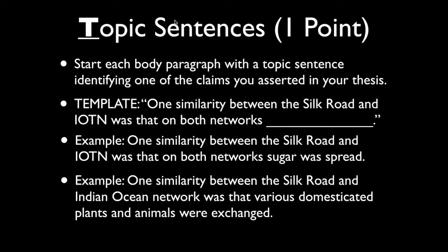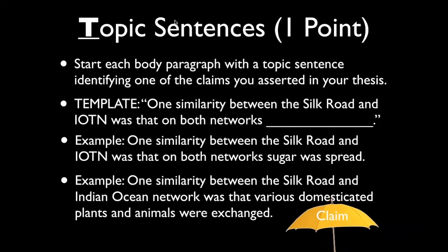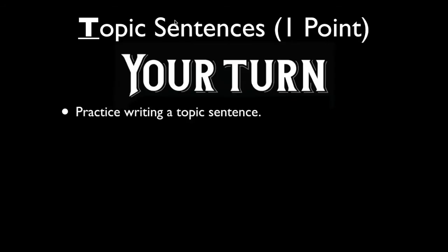Let's look at this one: 'one similarity between the Silk Road and the Indian Ocean network was that various domesticated plants and animals were exchanged.' First, is that historically accurate? Yes. Does it follow a clear line of reasoning? Yes — you're making an argument about the exchange of domesticated plants and animals. Do you have evidence to back it up? Yes. This topic sentence is a solid one. It provides a broader claim — like an umbrella — that you can support with multiple pieces of evidence.